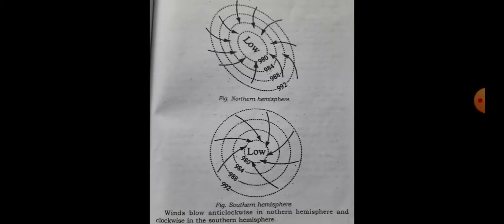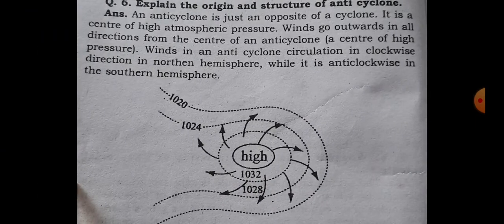Winds in cyclones are violent and very much destructive. The winds blow anti-clockwise in the northern hemisphere and clockwise in the southern hemisphere. Here two diagrams are given — one is of the northern hemisphere and another one is of the southern hemisphere. The second question is: explain the origin and the structure of anti-cyclone.